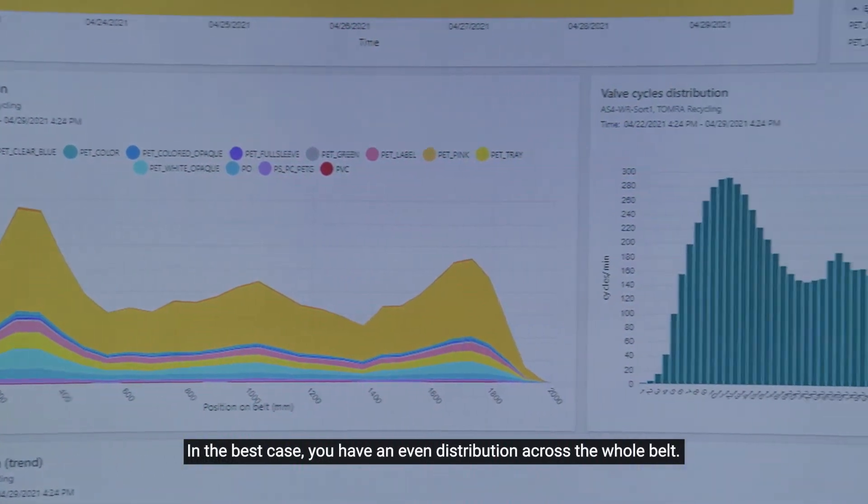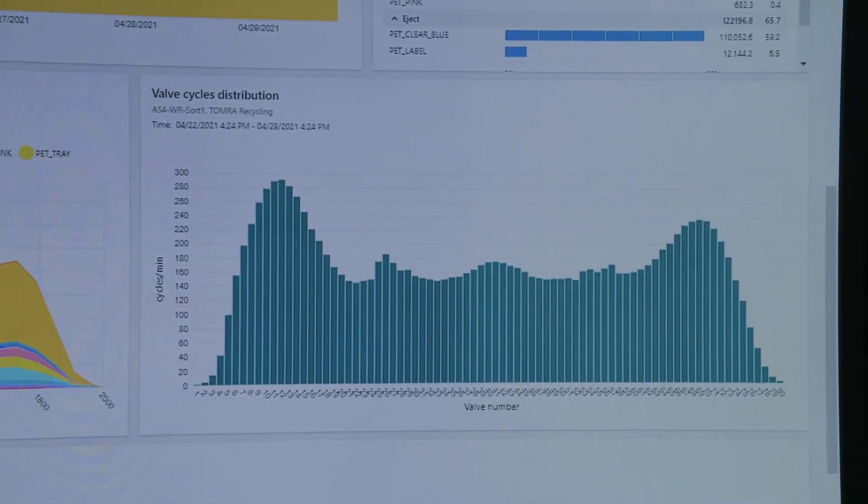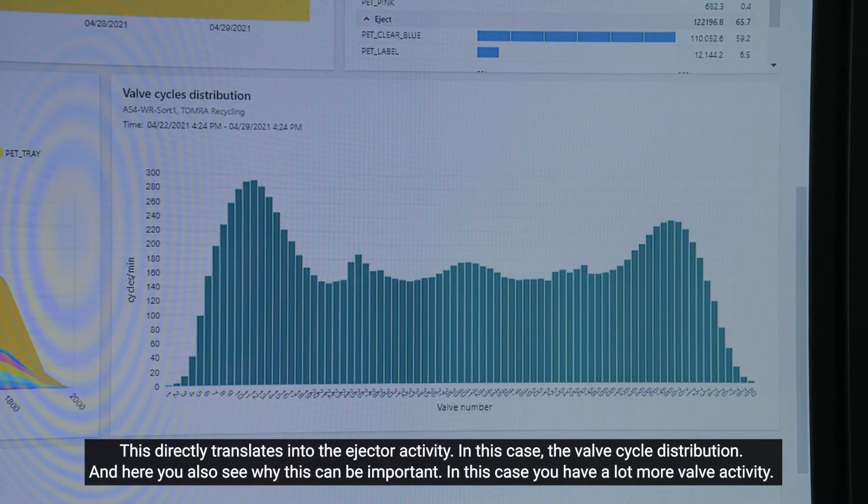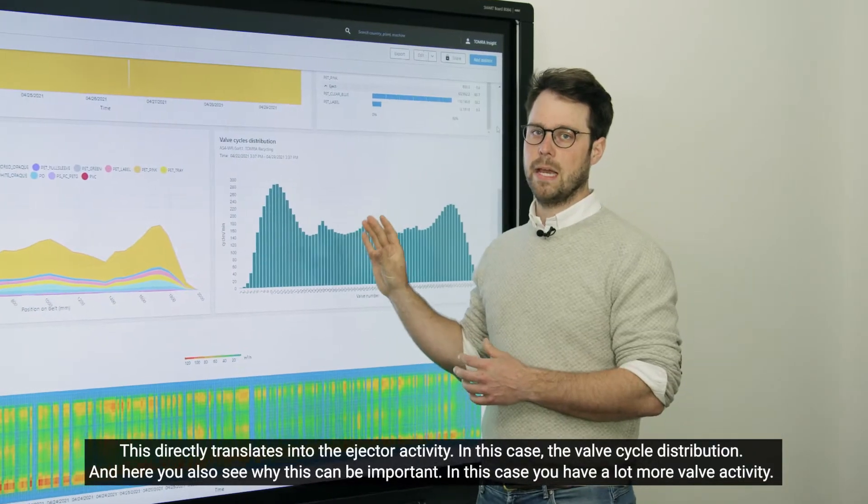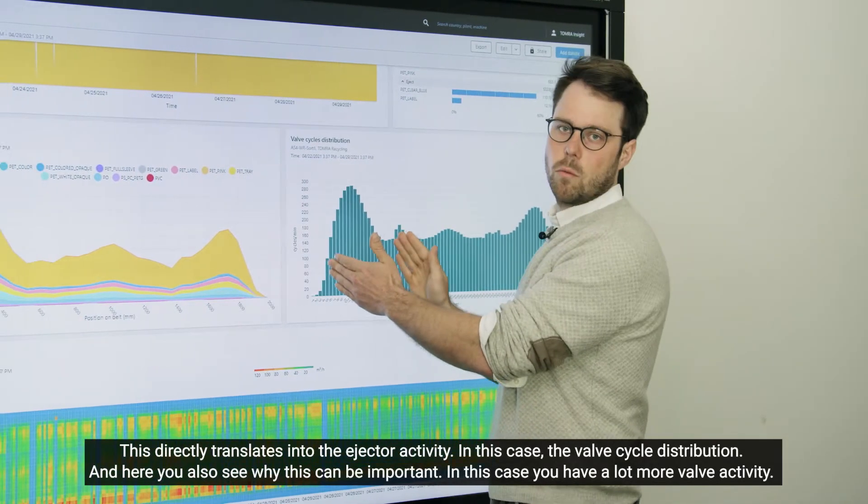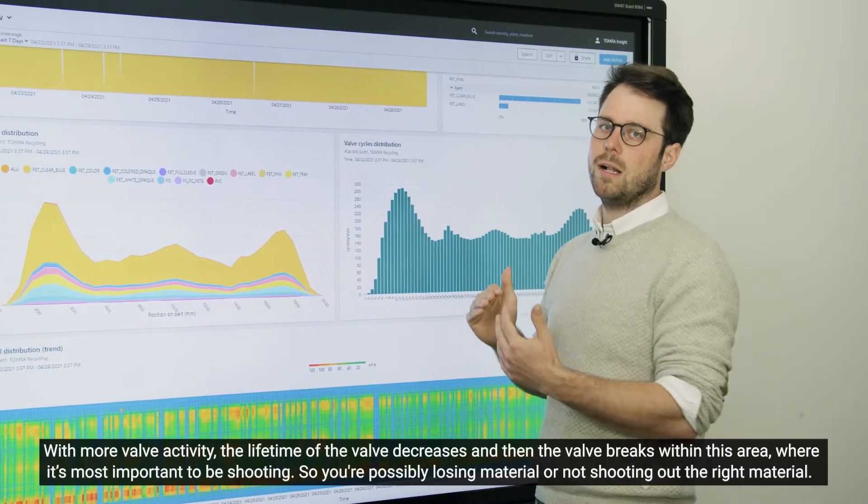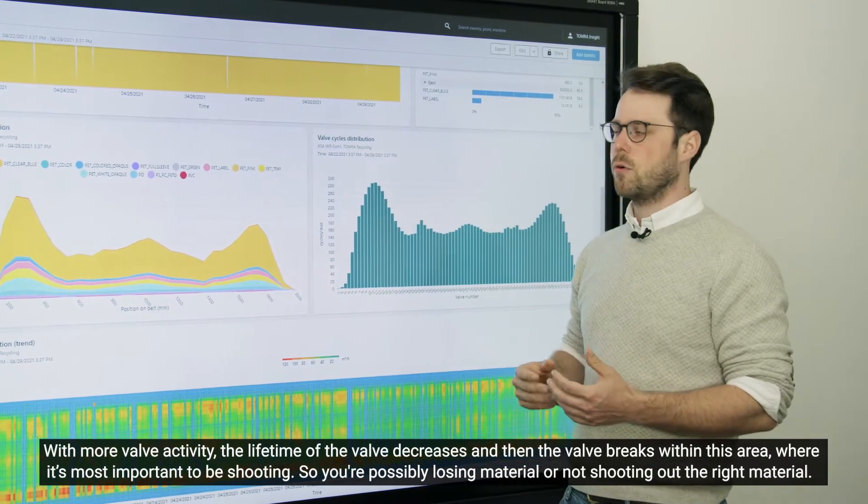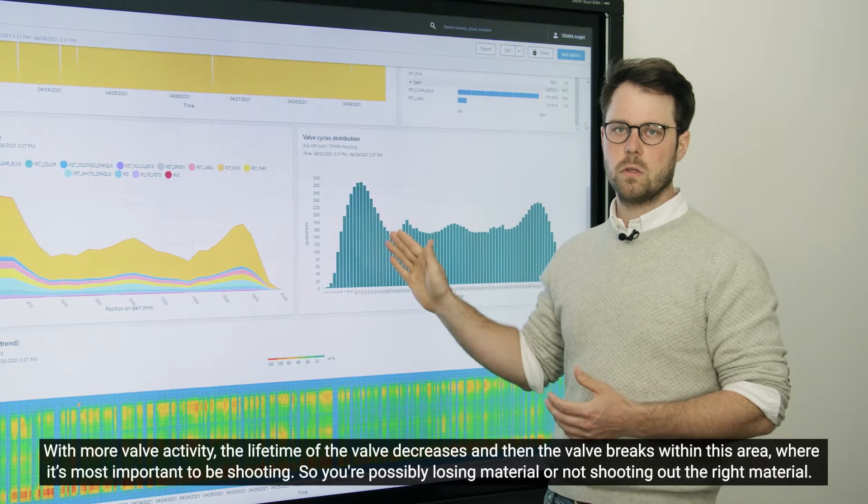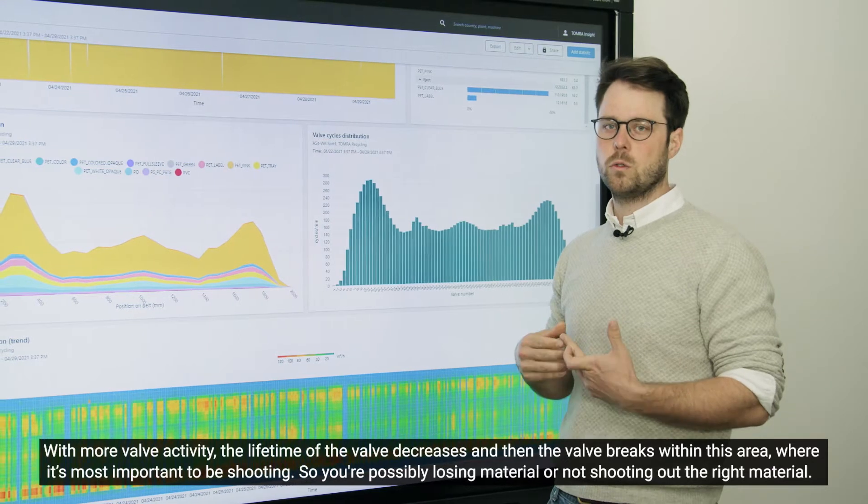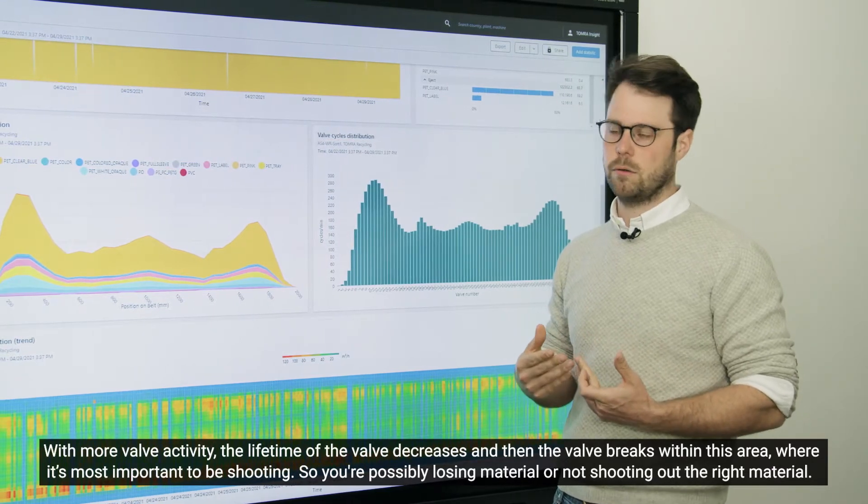In the best case, you have an even distribution across the whole belt. This directly translates into the ejector activity—in this case, the valve cycle distribution. And here you also see why it can be important. In this case, you have a lot more valve activity. With more valve activities, the lifetime of the valve decreases, and then the valve breaks within this area where it's most important to be shooting. So you're possibly losing material or not shooting out the right material.